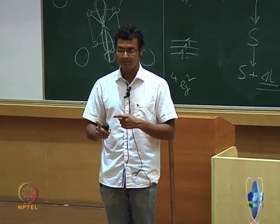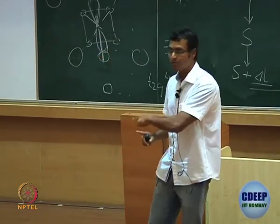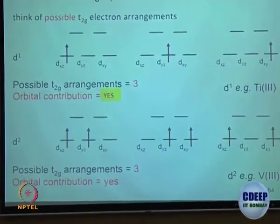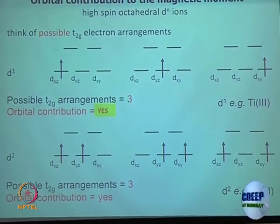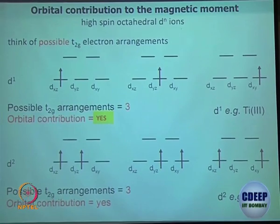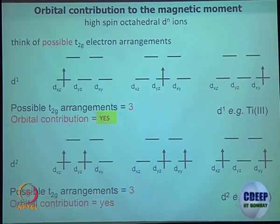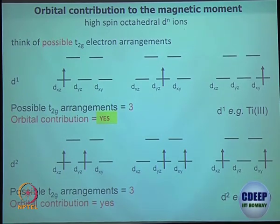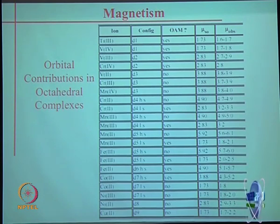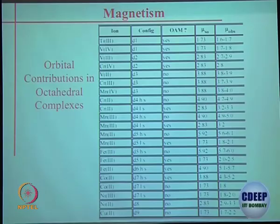I will look at this more carefully. The key point is: once you freeze an electron to a fixed orbital with full ligand overlap, you restrict orbital motion. But when multiple orientations are possible, some rotation is allowed and some orbital contribution comes. For d² configuration, once again three different ways exist to distribute electrons, giving degrees of freedom that produce orbital contribution. The experimental value will be a little bit more than the spin-only value for two unpaired electrons. I will stop here and continue the discussion on magnetism in the next class.